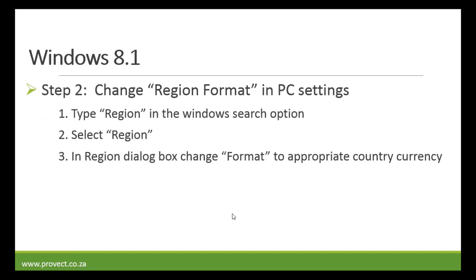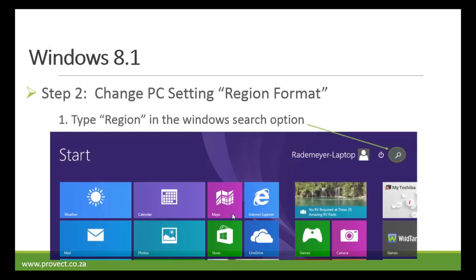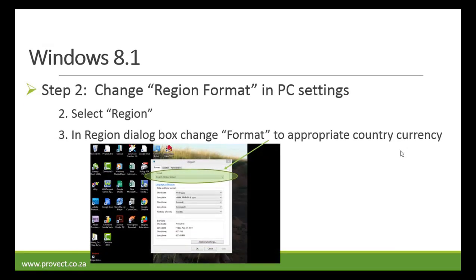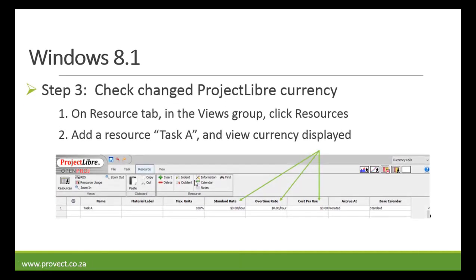Type region in your Windows search option, then select your region. In the region dialog box, change the format to the appropriate country currency — again we're going to change it to English, United States. Then check the changed Project Libre currency: click on resources, add a resource task A, and view your currency, which has now been changed to dollars.